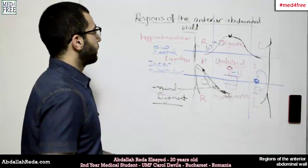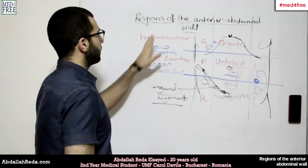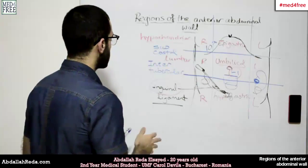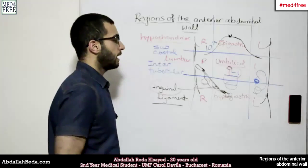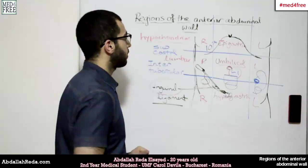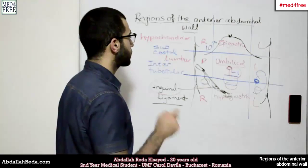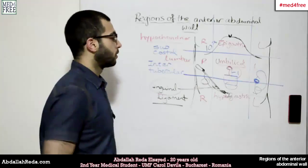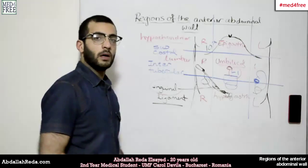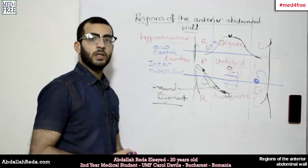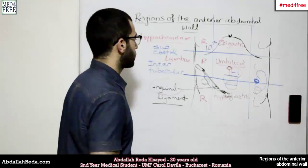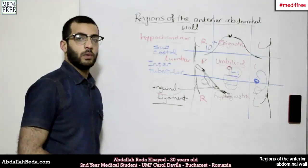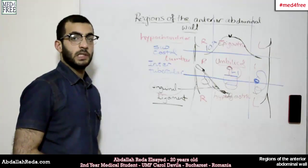So these are the regions of the anterior abdominal wall. Next time we are going to talk about the structure of the anterior abdominal wall concerning the skin, the muscles, and so on. Until then, thank you for watching and see you.